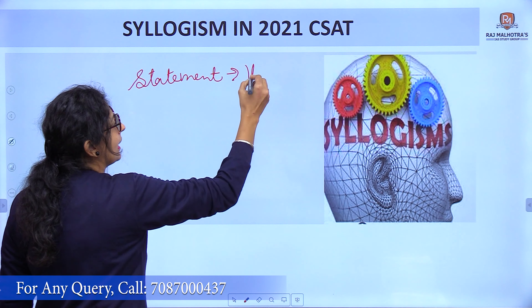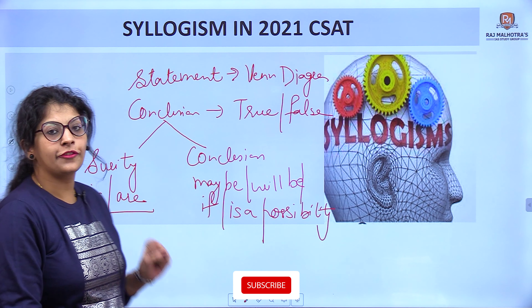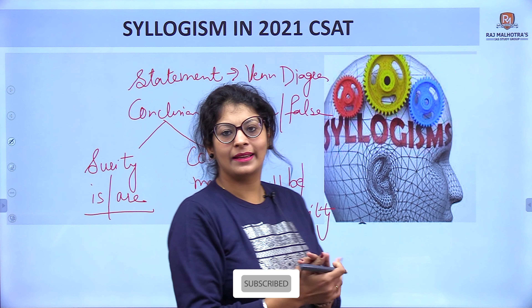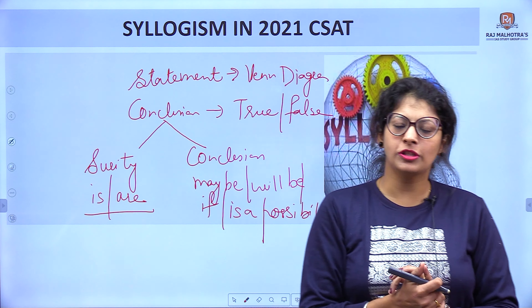In syllogism, we have statements and conclusions — this is the full name: statement and conclusion. We have to draw the Venn diagram of the statements, and from this diagram we have to tell which conclusion is true or false.